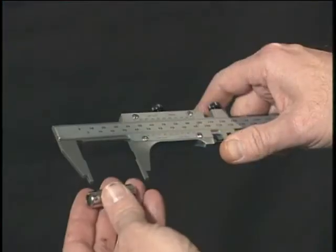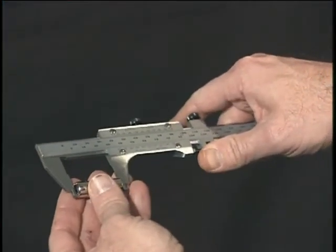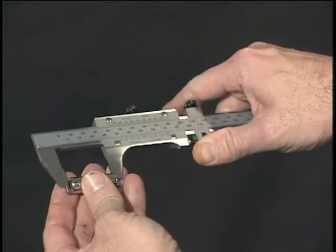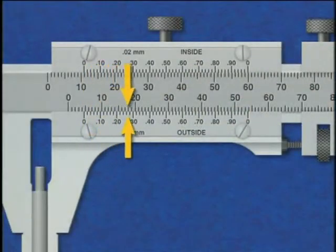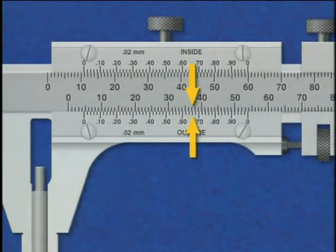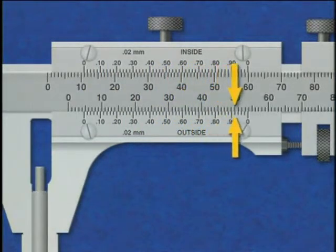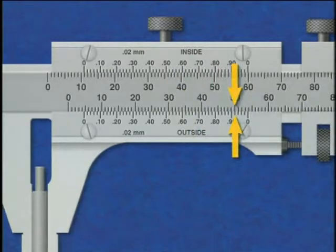Because of this minute difference, when a measurement is taken, only one graduation on the plate will exactly coincide with a graduation on the stationary bar. This intersection is where the fractional portion of a Vernier caliper measurement is read.